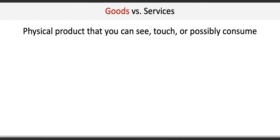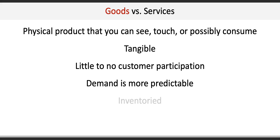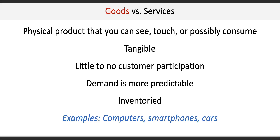Next, we explored the differences between goods and services. Goods are physical products that you can see and touch and consume. They're tangible, they require little to no customer participation, demand is generally more predictable, and goods can be inventoried. Classic examples include computers, smartphones, and cars.